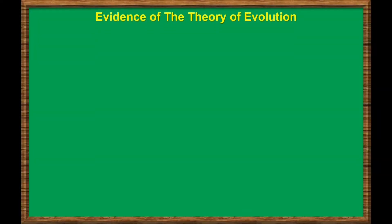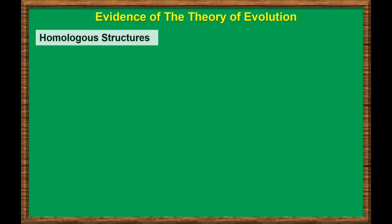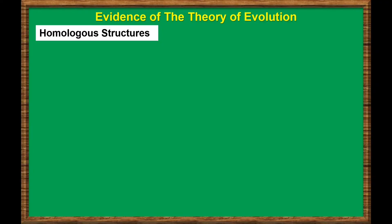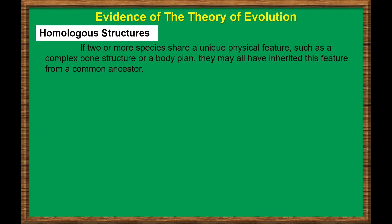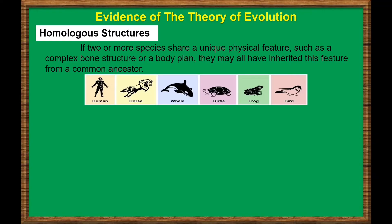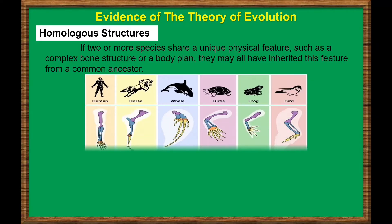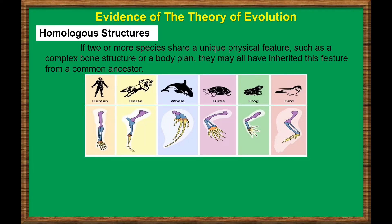Here are the evidence that support the theory of evolution. Homologous structures: if two or more species share a unique physical feature, such as a complex bone structure or a body plan, they may all have inherited this feature from a common ancestor. For example, the forelimbs of human, horse, whale, turtle, frog, and bird look pretty different on the outside. However, if you look at the bone structure of the forelimbs, you'll find that the pattern of bones is very similar across species.